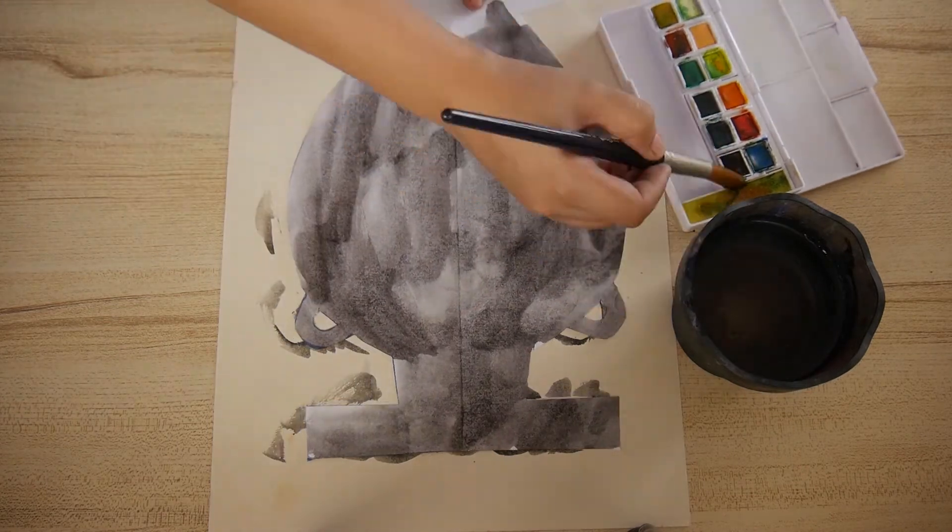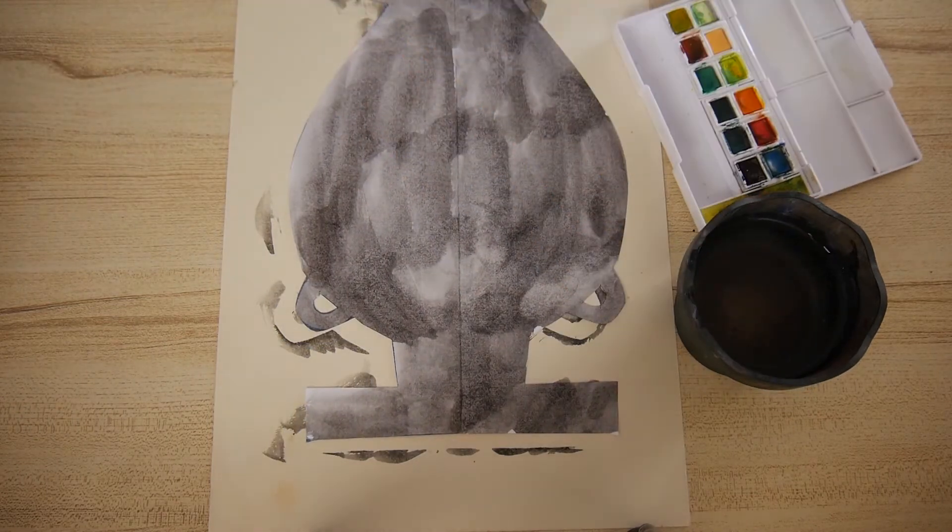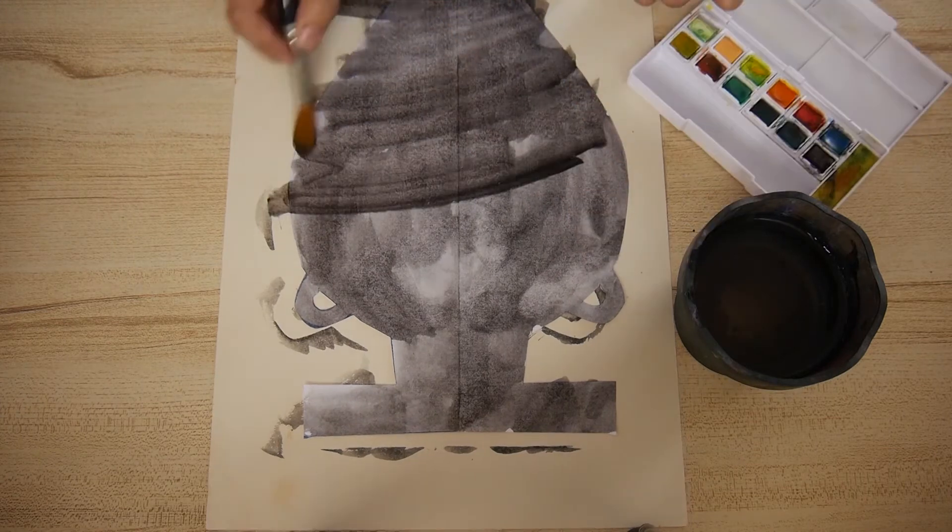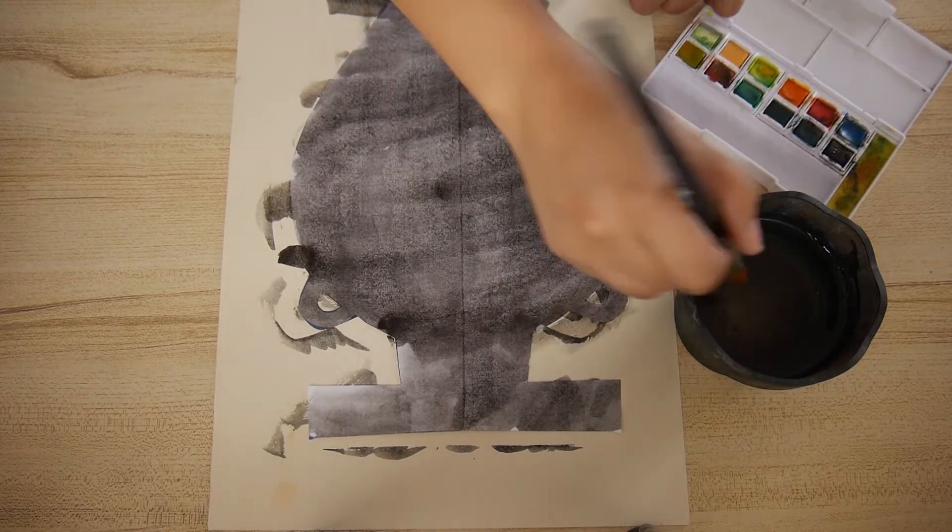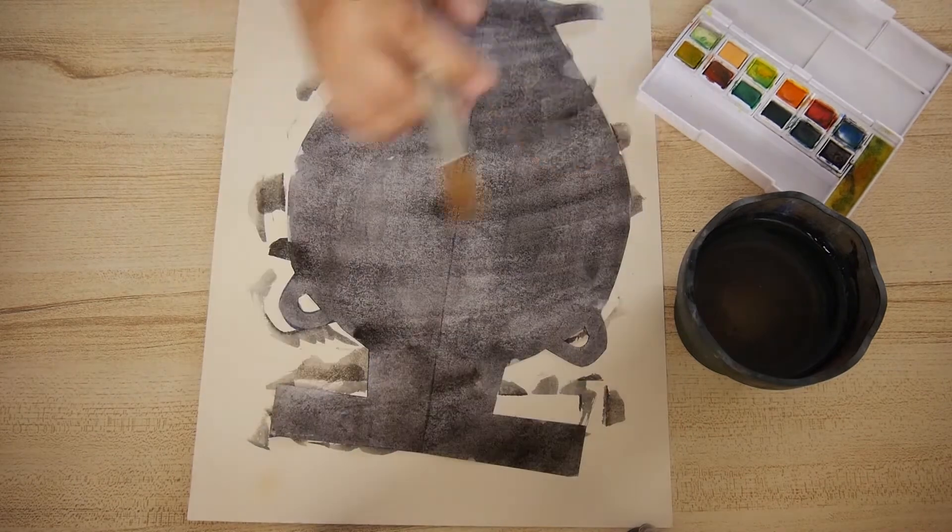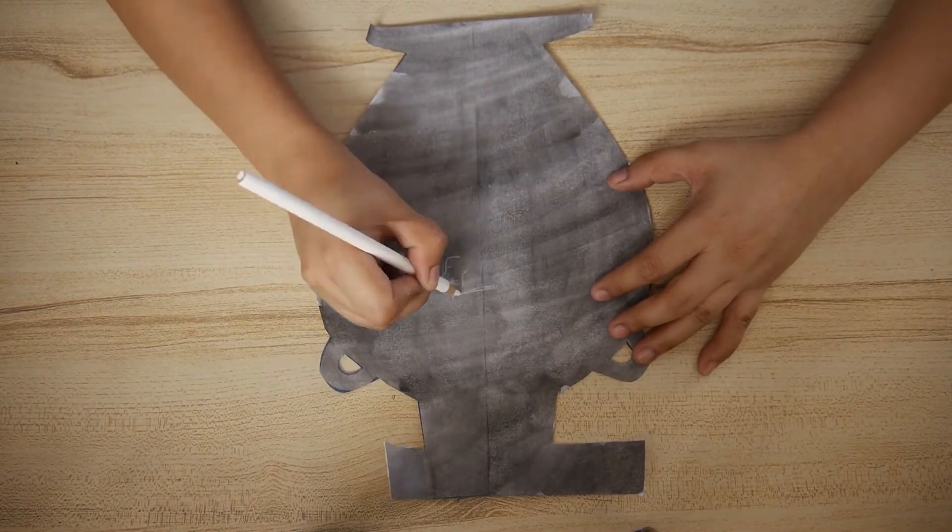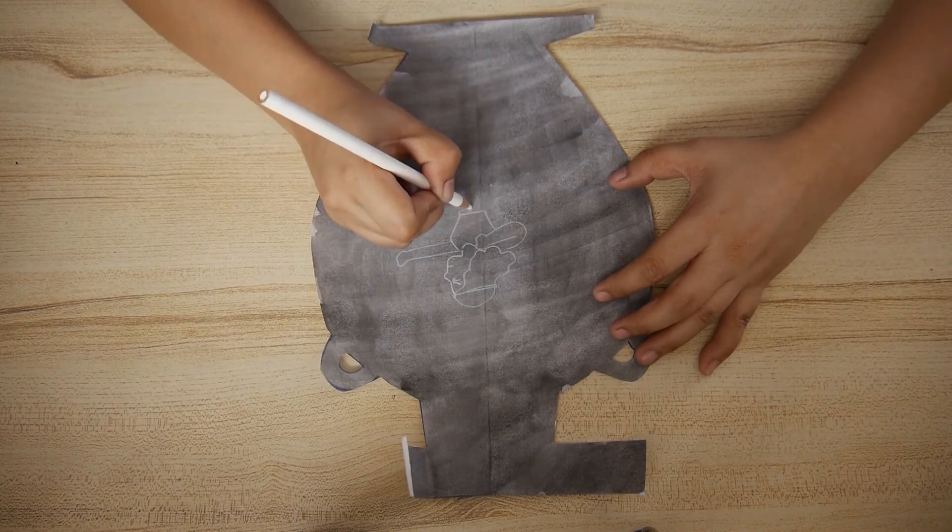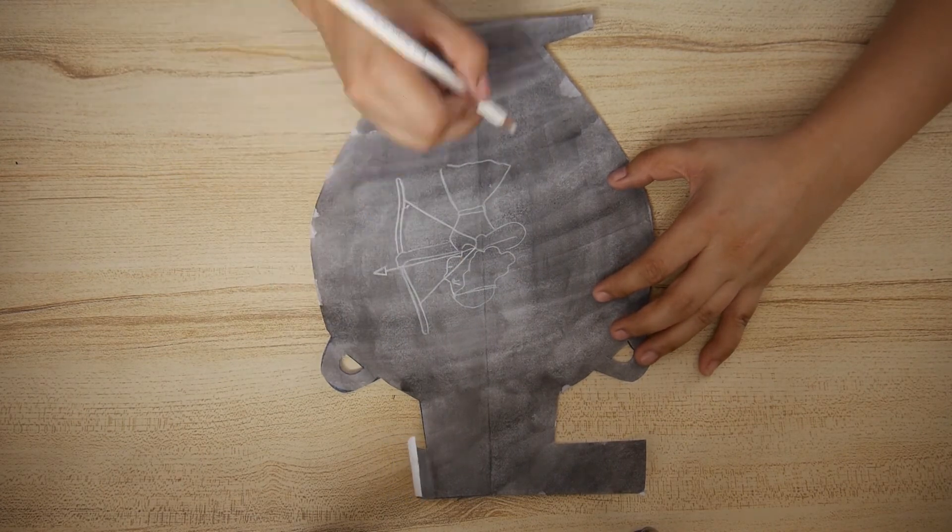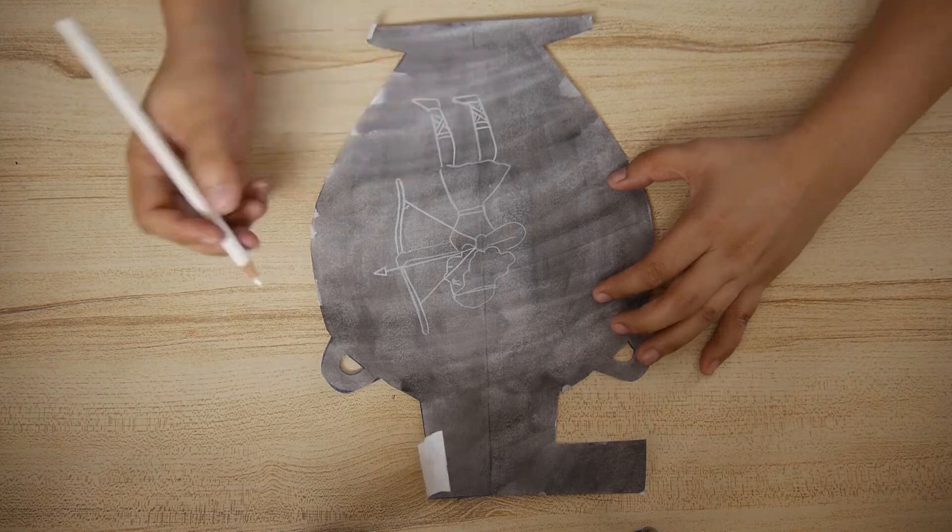After painting the entire amphora with black paint, I lay another layer of black paint over it just to make it a bit darker. Then I set it aside to dry. When it's dry, I start drawing my Greek goddess Artemis in this picture. Artemis is the goddess of hunting.